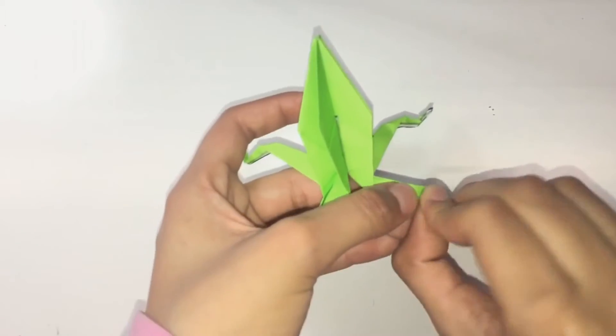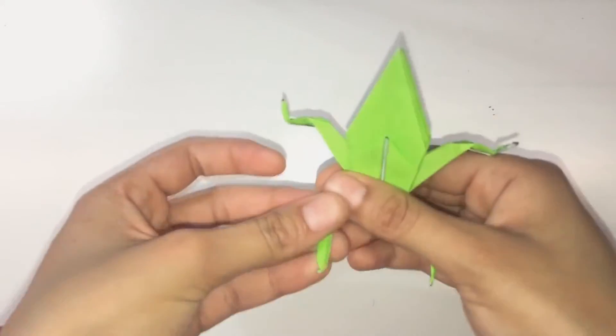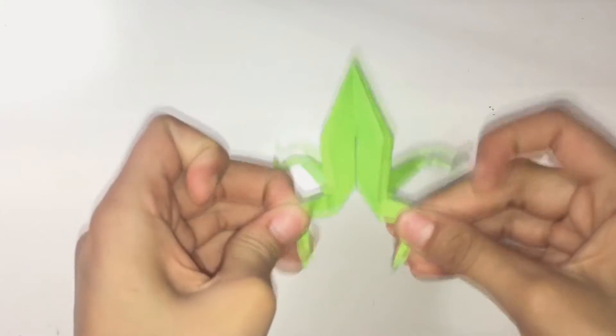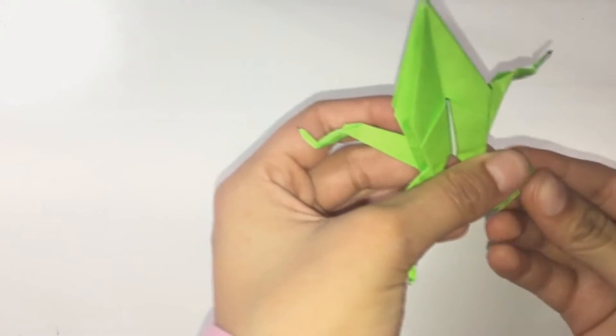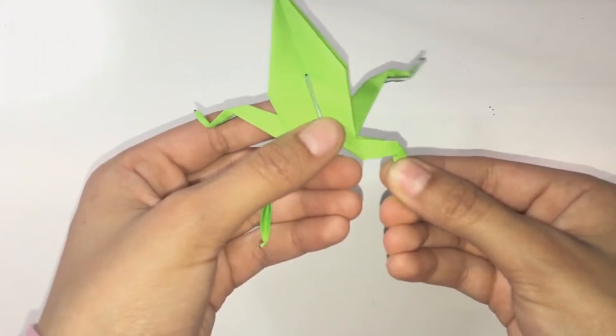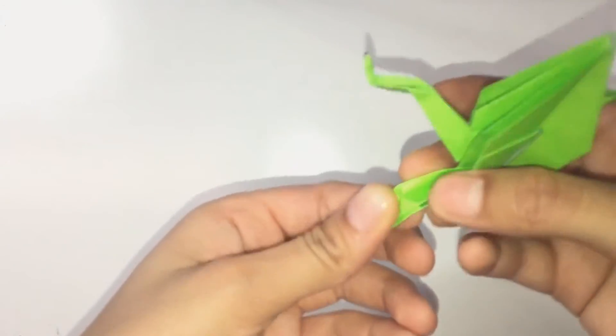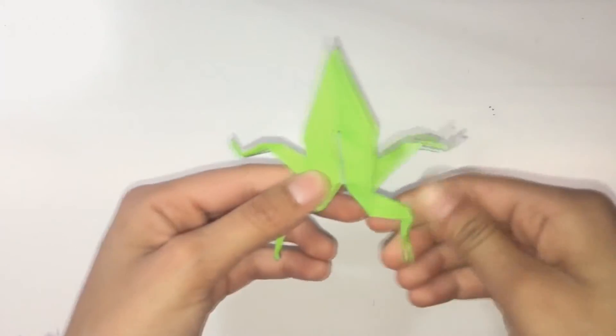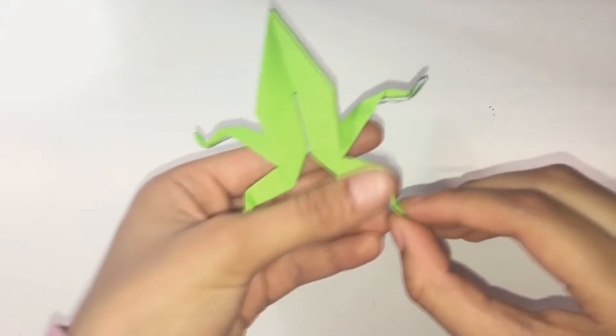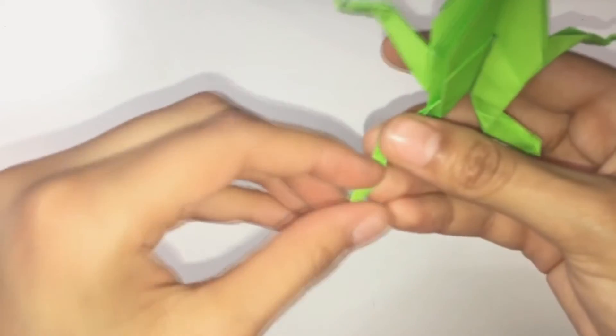For the back legs, just fold them back at whatever angle you'd like, and then inside reverse fold. This leg got a little messed up but then again you just fold up the feet and squash them down, or you can inside reverse fold them if you want them to look a little bit better.